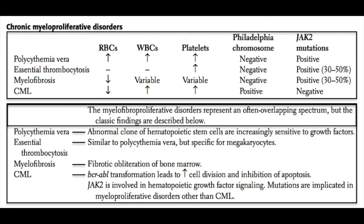When we compare these four disorders in terms of their laboratory values — that's often how you tell the difference between them — in polycythemia vera you'll have an increase in the red blood cell count, hemoglobin, or hematocrit. Interestingly, polycythemia vera also usually results in a leukocytosis and a thrombocytosis. The Philadelphia chromosome is not present in polycythemia vera; instead, it results from a mutation called the JAK2 mutation. The JAK2 protein is involved in hematopoietic growth factor signaling, and certain mutations of JAK2 can result in uncontrolled proliferation of these stem cells.